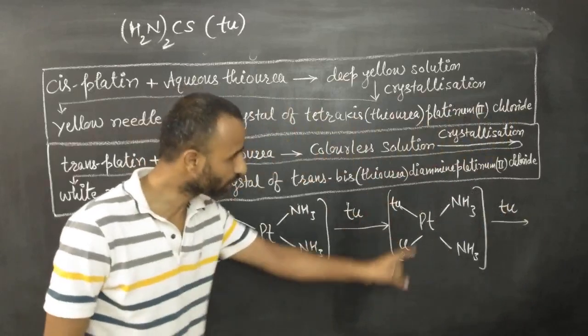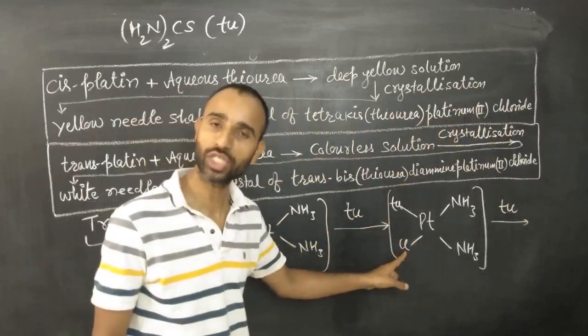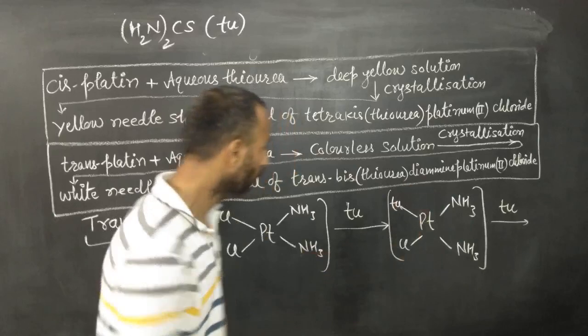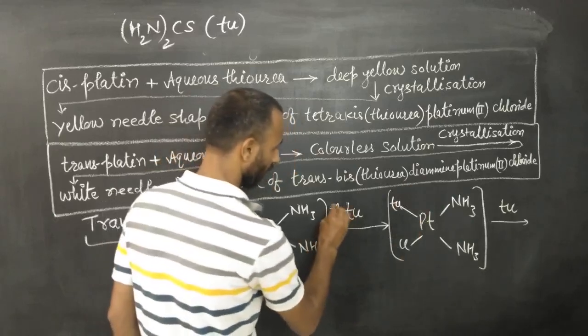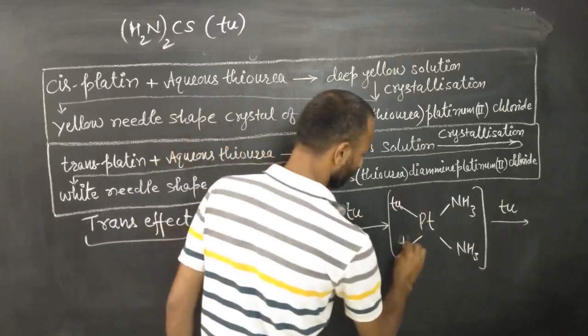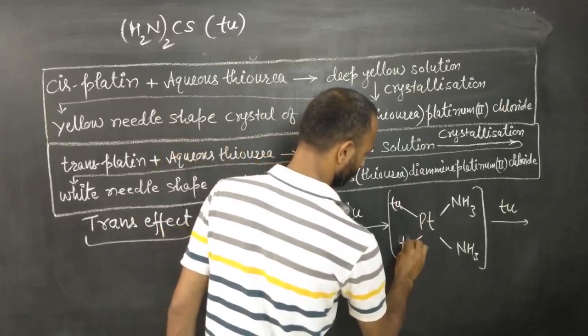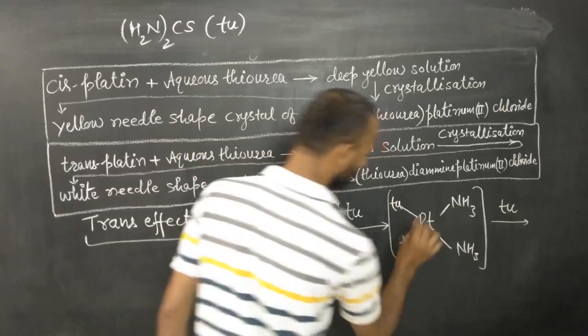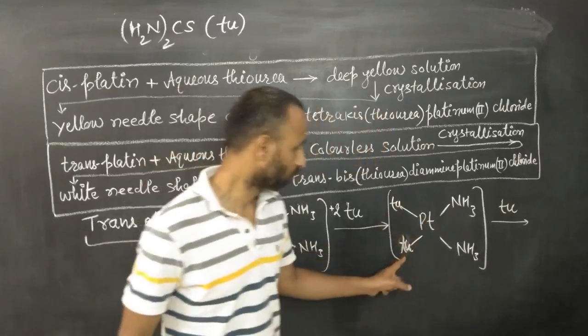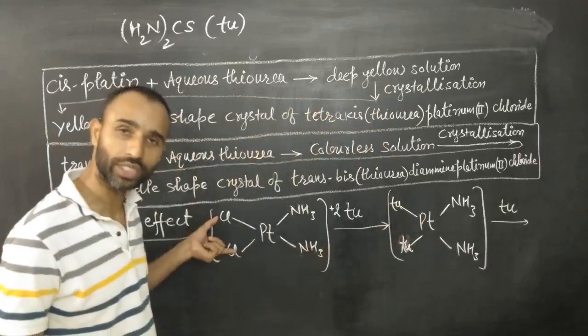Now another thiourea also removes the next chlorine. So actually if we add here, we get this product. First of all, we get two thiourea in place of two chlorines.